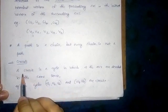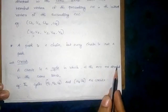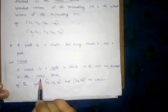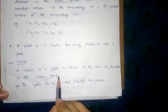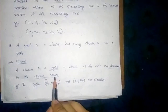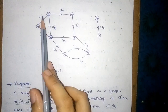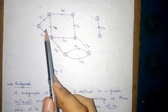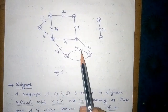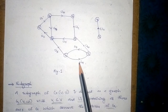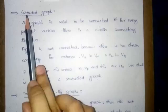Circuit. A circuit is a cycle in which all the arcs are directed in the same sense — that is, they have the same direction. For example, the cycle U1, U3, U2 is an example of a circuit. And the cycle U9, U8 is also an example of a circuit.